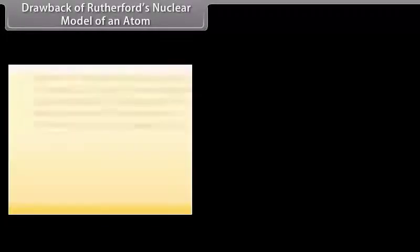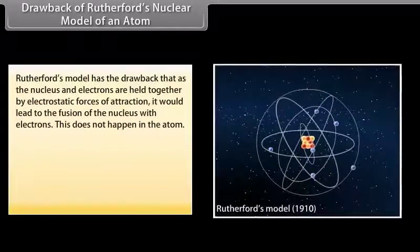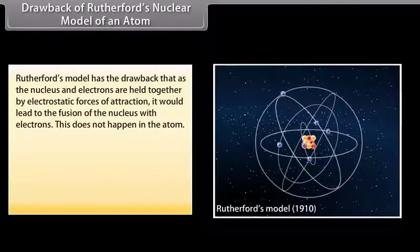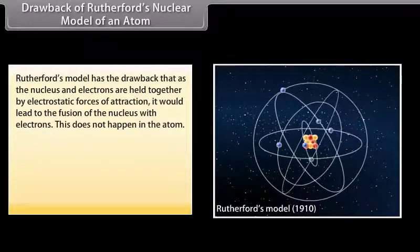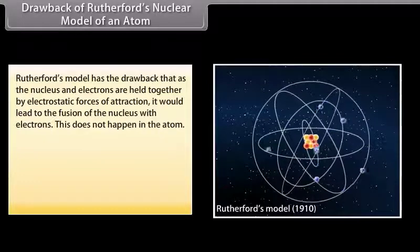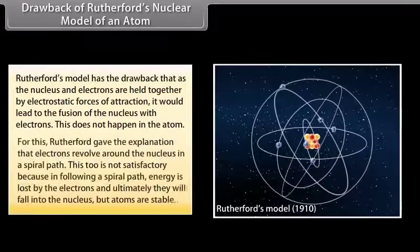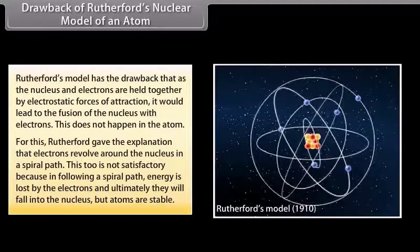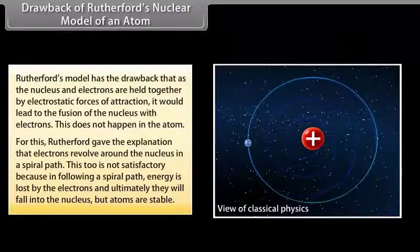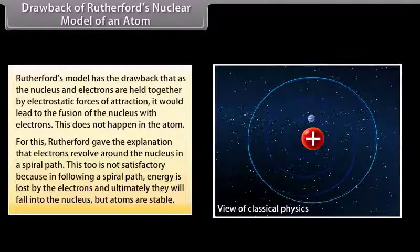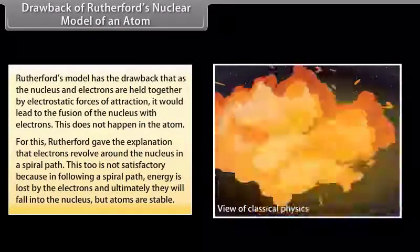Rutherford's model has the drawback that, as the nucleus and electrons are held together by electrostatic forces of attraction, it would lead to the fusion of the nucleus with electrons — but this does not happen in the atom. Rutherford gave the explanation that electrons revolve around the nucleus in a spiral path. This too is not satisfactory because in following a spiral path, energy is lost by the electrons and ultimately they would fall into the nucleus, but atoms are stable.